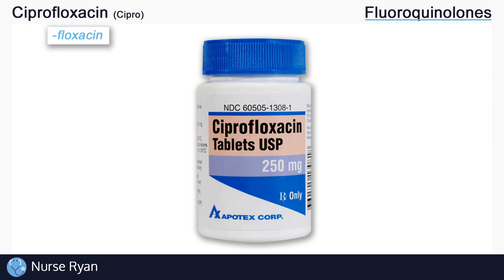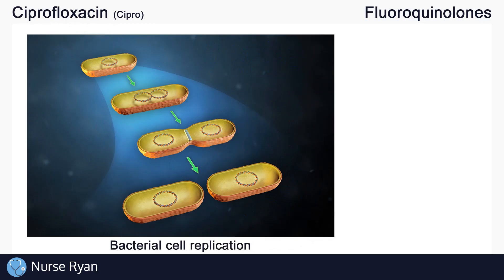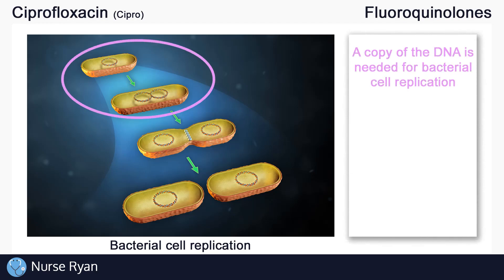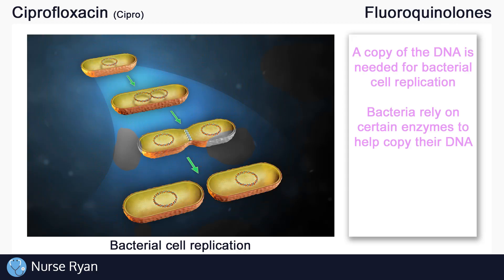Let's go over how fluoroquinolones work to fight against bacteria. In order to survive and thrive in a host like you or me, bacteria need to be able to replicate themselves. Before a bacteria replicates or divides, they first need to make a copy of their DNA, which would then be passed to the replicated cell. In order to copy their DNA, bacteria rely on certain enzymes to help get the job done.